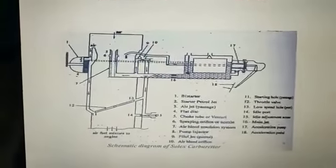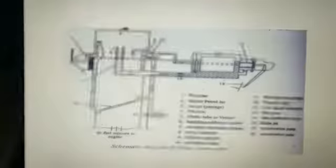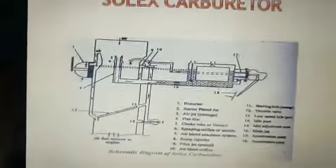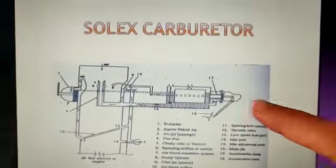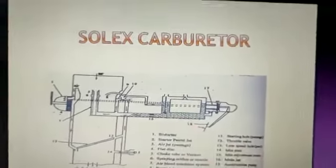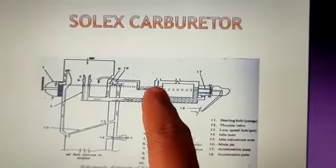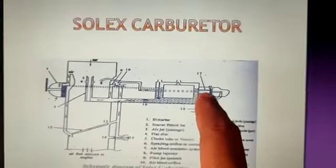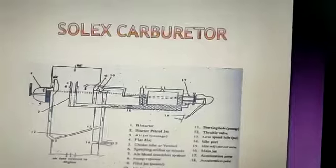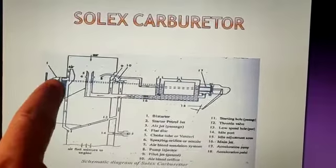We have already discussed all five circuits. The first one is the float circuit. There is a float here which always maintains a constant level of fuel in the tank.